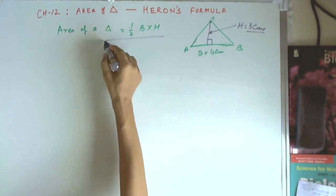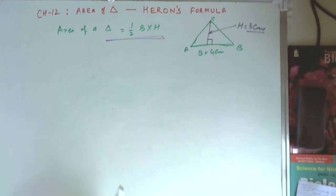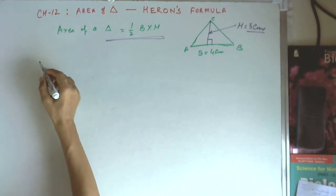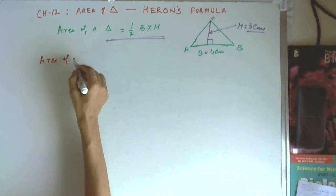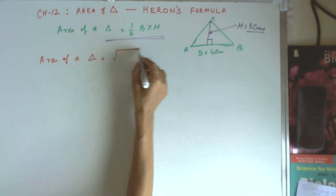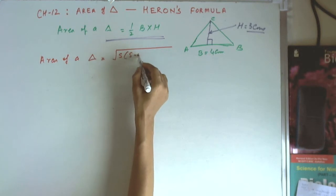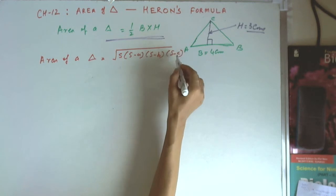Now, in order to make our life simple, Heron worked out a formula for computing the area of a triangle when the three sides are given. According to Heron's formula, the area of a triangle is equal to the square root of S(S−A)(S−B)(S−C).